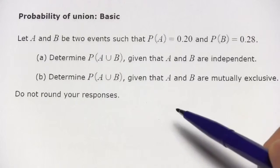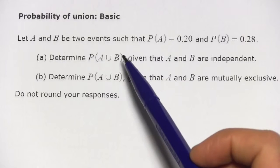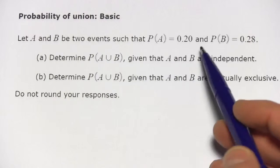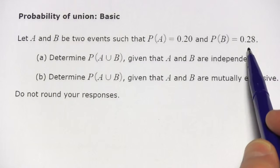Here we are looking at the probability of a union. Let A and B be two events such that the probability of A is 0.2 and the probability of B is 0.28.